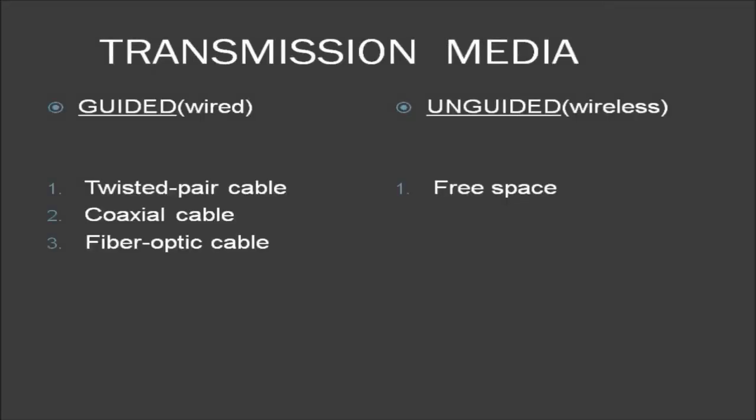In telecommunication, the transmission media can be divided into two broad categories: the guided and the unguided. Guided media includes the twisted pair cable, the coaxial cable and the fiber optic cable. The unguided media, which is the wireless one, includes free space.